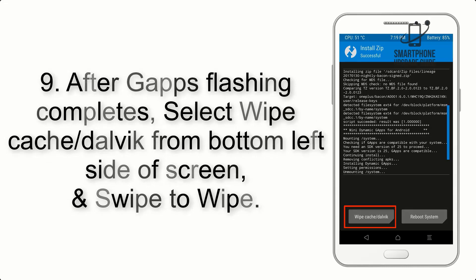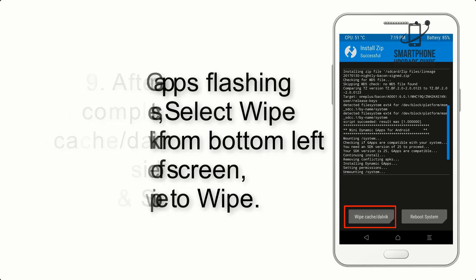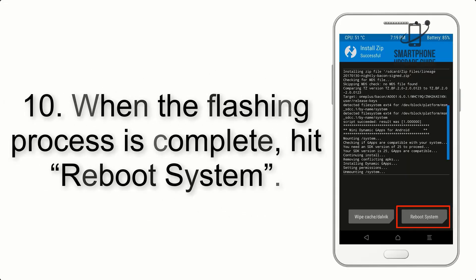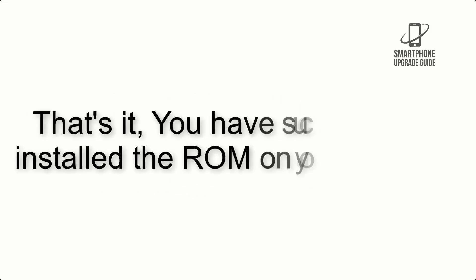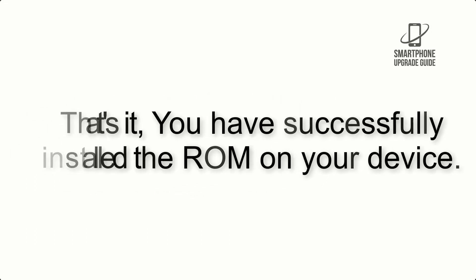Step 8: Flash the GApps zip package in the same manner. Step 9: After GApps flashing completes, select Wipe Cache and Dalvik from the bottom left side of the screen and swipe to wipe. Step 10: When the flashing process is complete, hit Reboot System. That's it — you have successfully installed the ROM on your device.